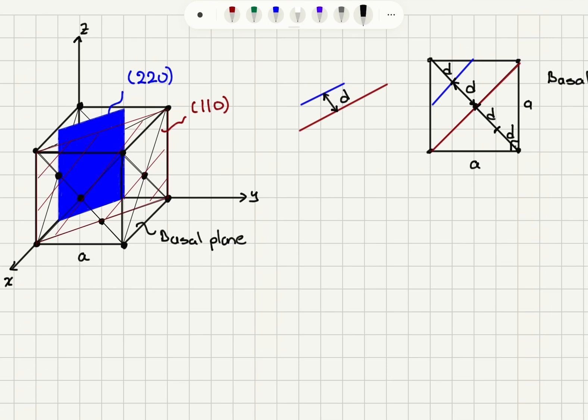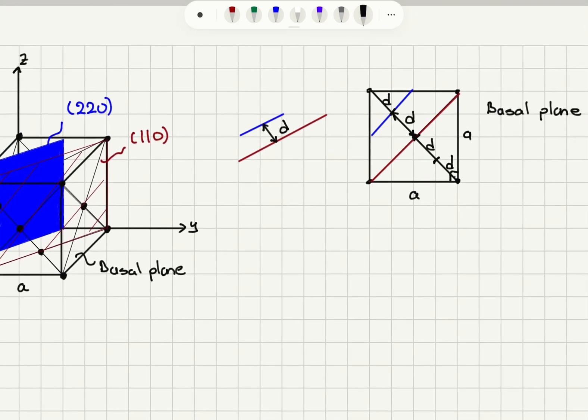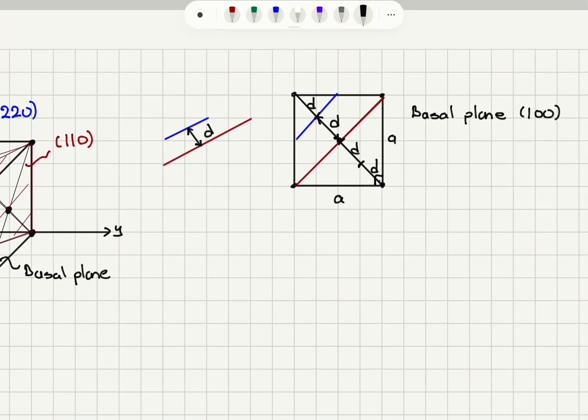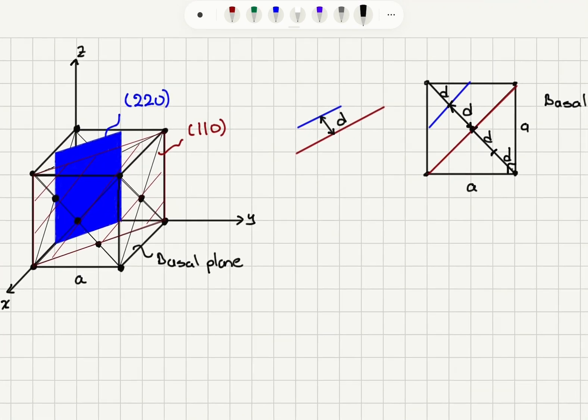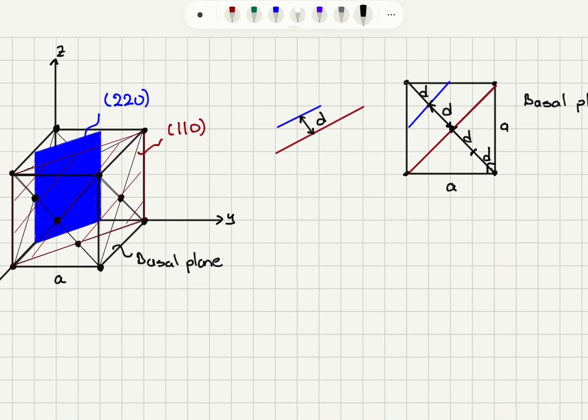So, if you look at the blue line, it's basically the projection of this plane onto the xy plane, and the red line is the projection onto the xy plane of 110. And you can see here, if I look at the basal plane, if I look at these projections, the distance between these 2 planes is d.